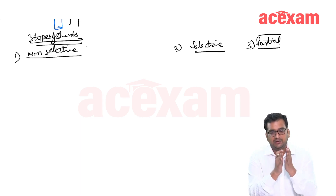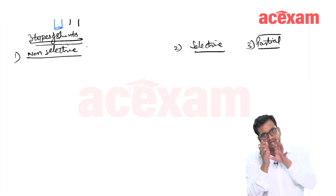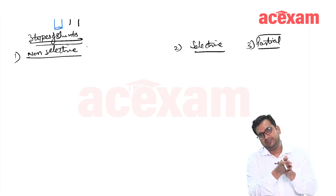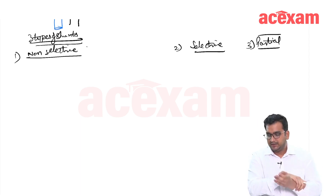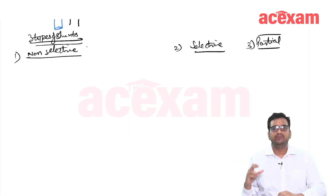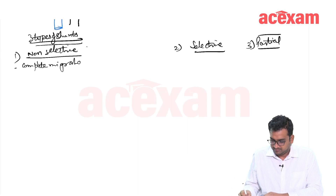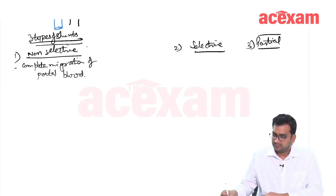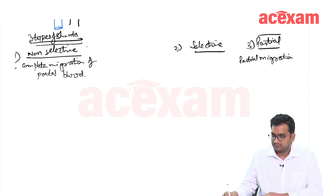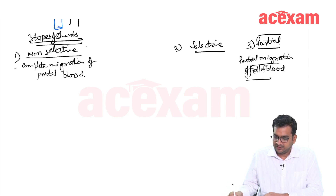To summarize: a non-selective shunt involves complete migration of portal blood. A partial shunt involves partial migration of portal blood. A selective shunt is when only a selected region is drained — not the whole system.